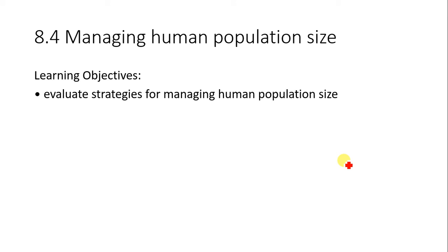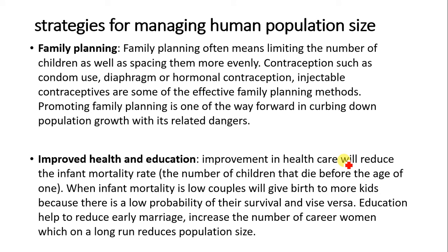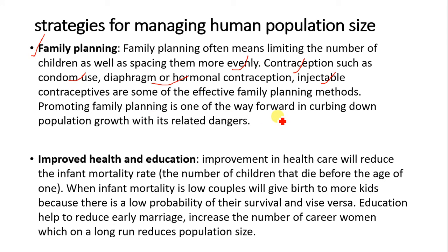So what are the strategies for managing human population size? First, family planning is a key strategy. Family planning often means limiting the number of children as well as spacing them evenly. It includes contraceptives such as condom use, diaphragm, hormonal contraceptives, and injectable contraceptives. Promoting family planning is one of the ways forward in curbing population growth and its related dangers.